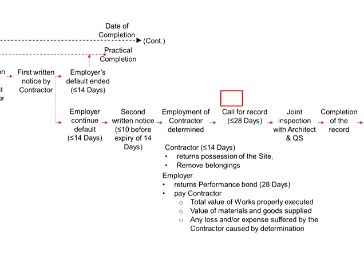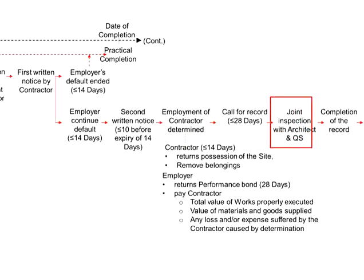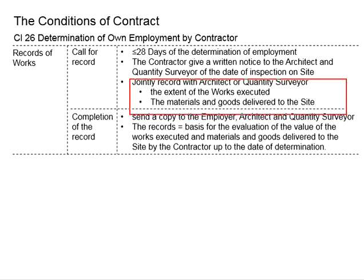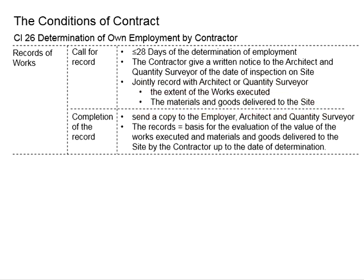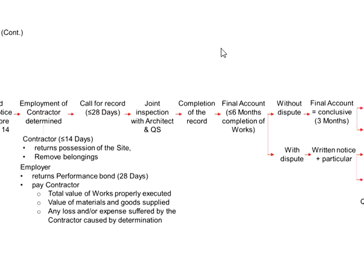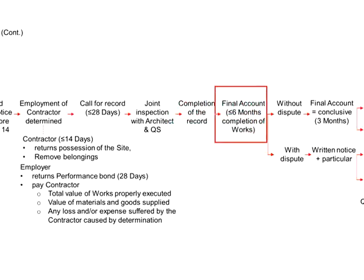Within 28 days, the contractor shall call for a record. There shall be a joint inspection with the architect and quantity surveyors. The purpose is to determine the extent of the work that has been executed, as well as the materials and goods delivered to the site. Once this is done, the contractor will have to compile the record and come up with the final account within 6 months of the determination of employment.